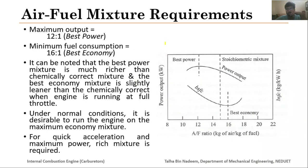We discussed two graphs: air-fuel ratio versus power output, and air-fuel ratio versus brake specific fuel consumption. We concluded from the first graph that whenever we require higher power we have to provide a rich air-fuel mixture. This line represents the stoichiometric mixture, and if we provide a rich mixture — which is on the left side of the stoichiometric line — we can achieve the best power output.